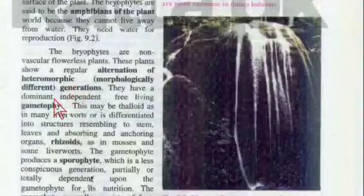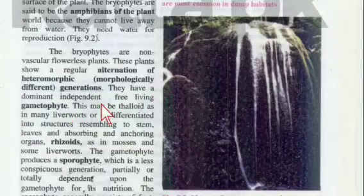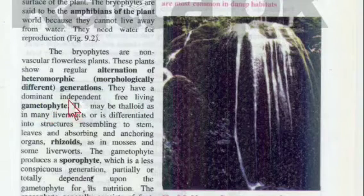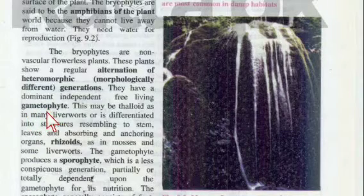Bryophytes are non-vascular, flowerless plants — they do not have flowers. These plants show a regular alternation of heteromorphic (morphologically different) generations, such as gametophyte and sporophyte. They have a dominant, independent, free-living gametophyte, while the sporophyte is dependent.